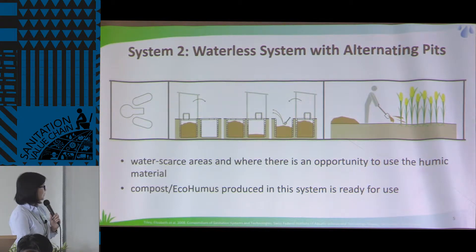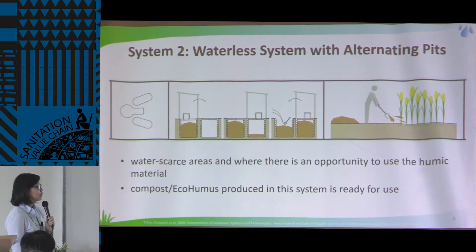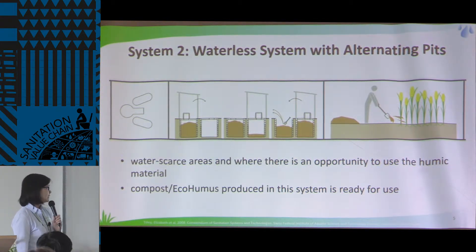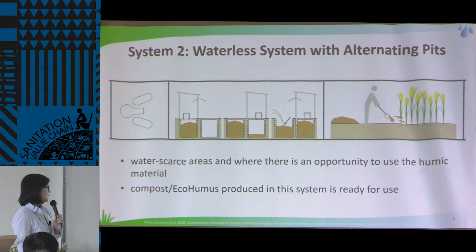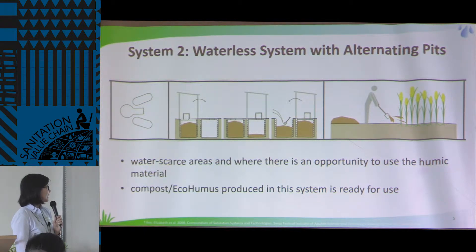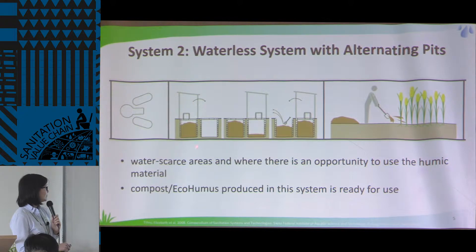The second type of system is the waterless system with alternating pits. If you have enough space in the backyard in rural areas, you could have two pits wherein you use one.